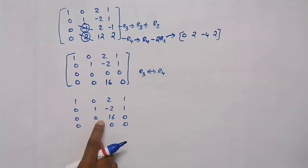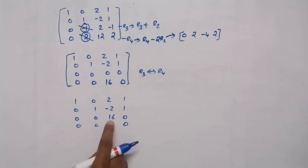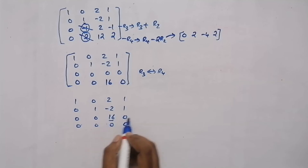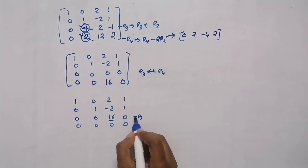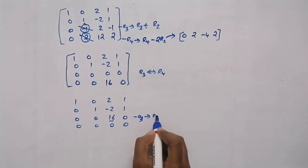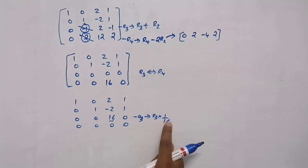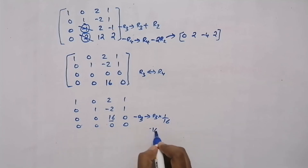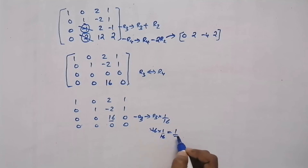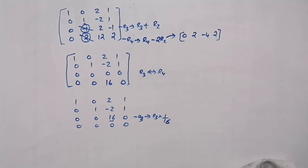Now in the third row, the first non-zero element — 0, 0, and this is our first non-zero element — should be 1. So we divide the third row by 16. 16 times 1/16: 16 and 16 cancel, giving 1. The first non-zero element should always be equal to 1, and after doing this operation we get the value as 1.